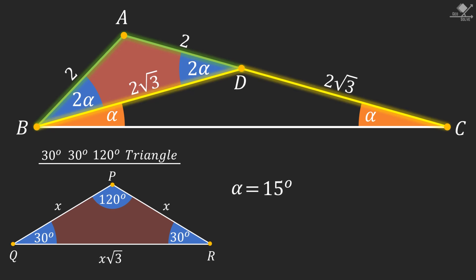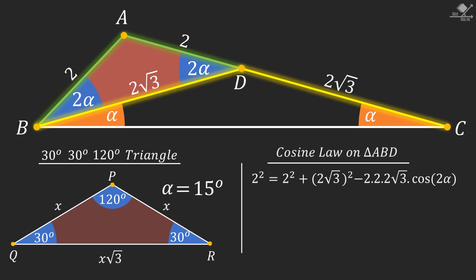We can also use cosine law for one of the 2 alpha degree angles to find the value of angle alpha. From here we can find the value of cosine 2 alpha equal to root 3 over 2. And that is the value of cosine 30. So we have the same 15 degree result for angle alpha.